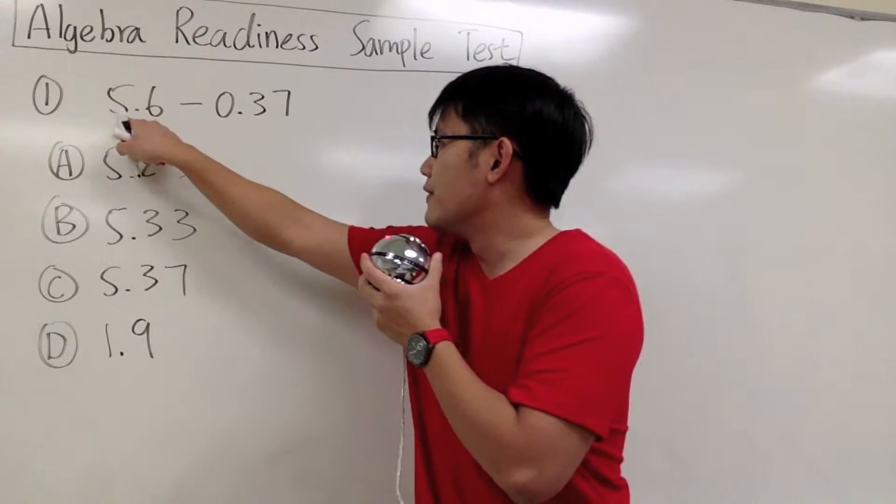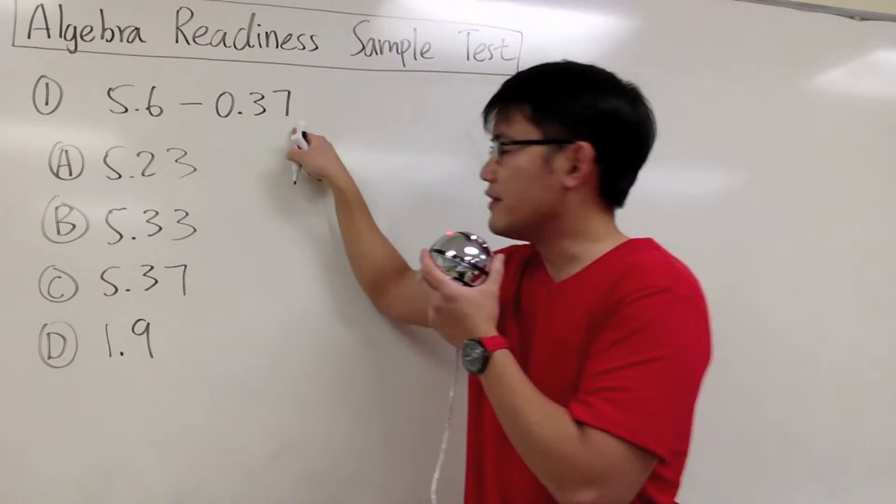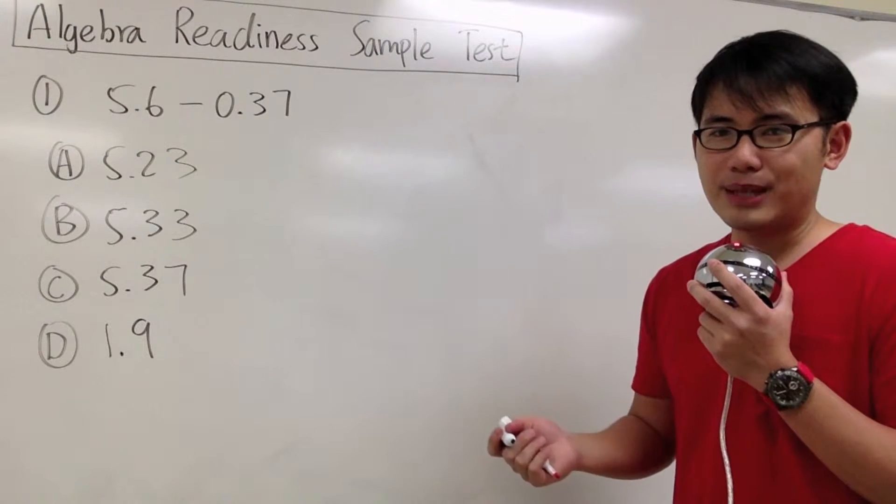For question number one, we are going to do 5.6 minus 0.37. This is subtracting decimal numbers.